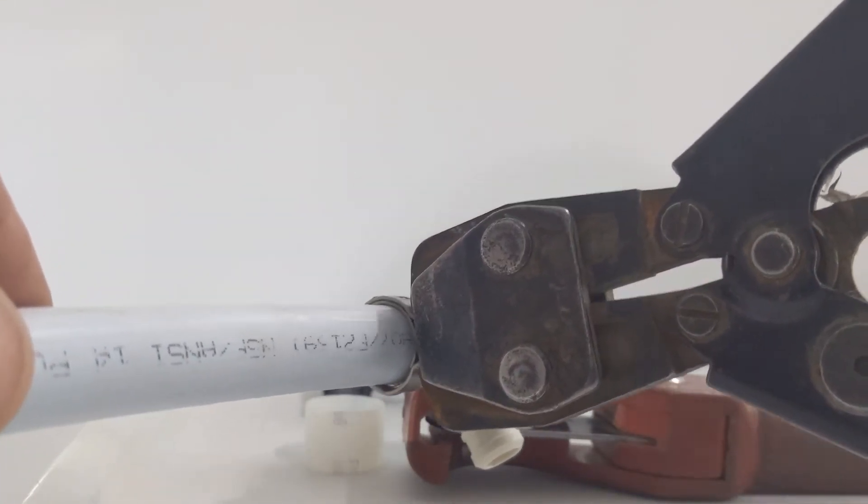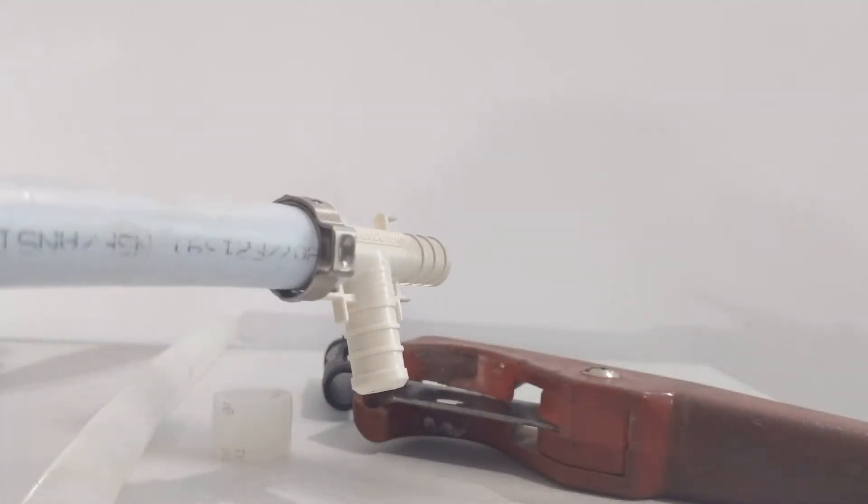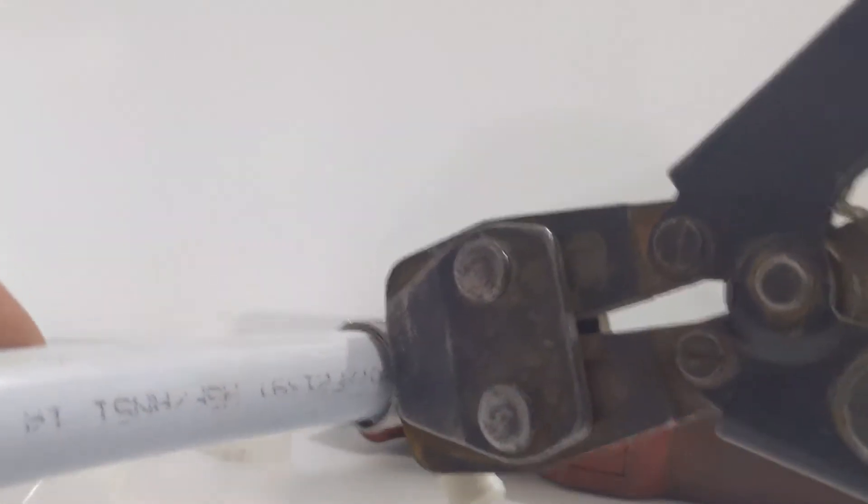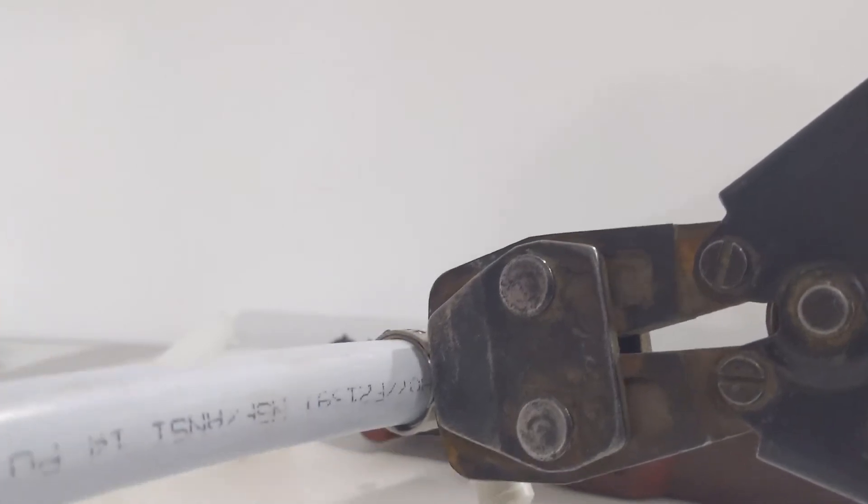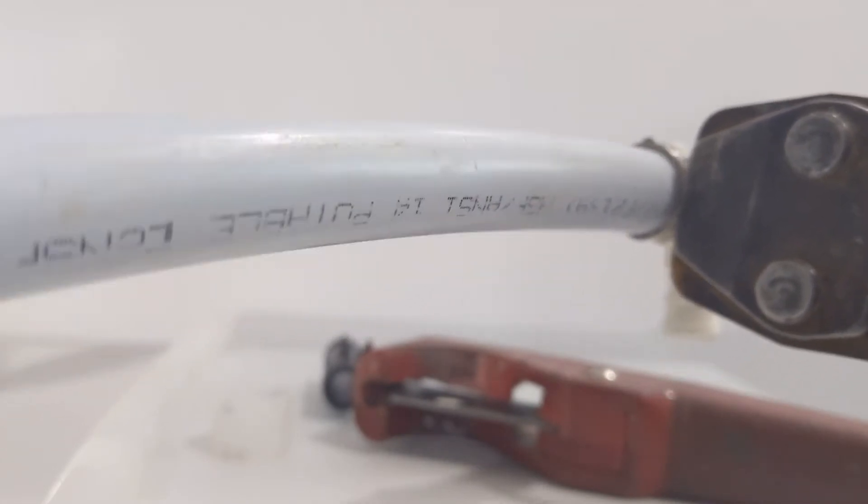What you're going to want to do is line it up, which can be tricky sometimes, depending on where you're working, because they do slide off like you just saw. Once you're lined up, you're going to want to squeeze the handle, and that's just going to crimp the actual ring. That's why they're called crimp rings.